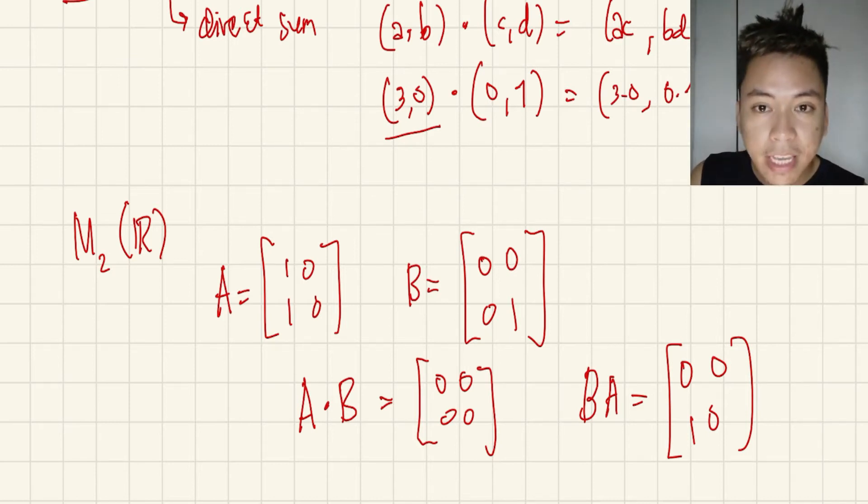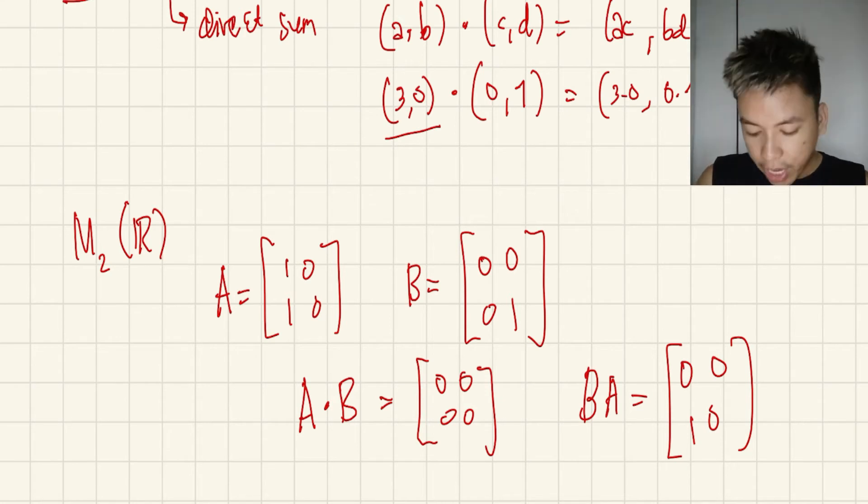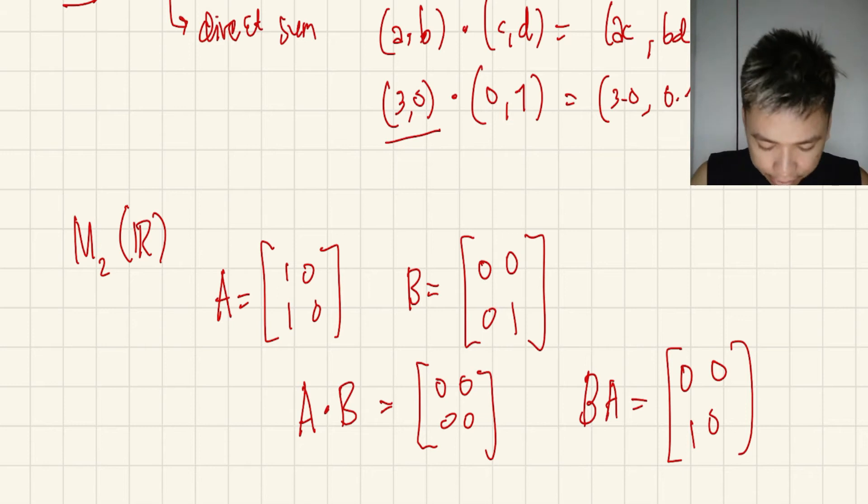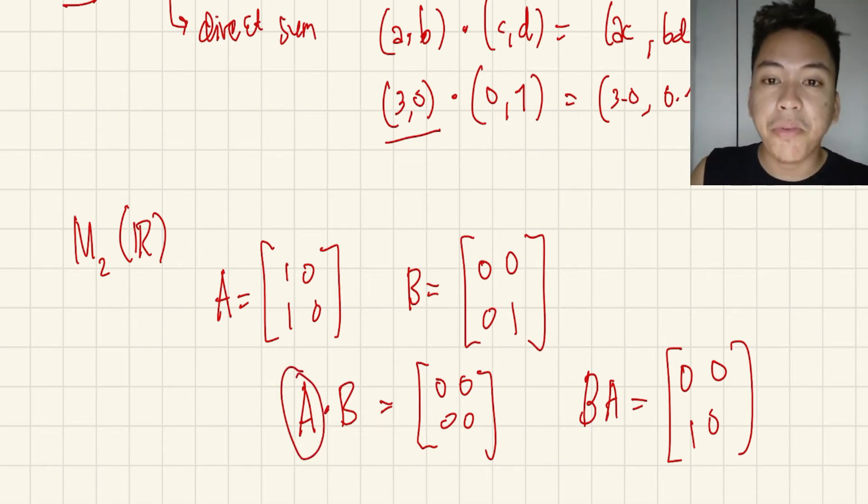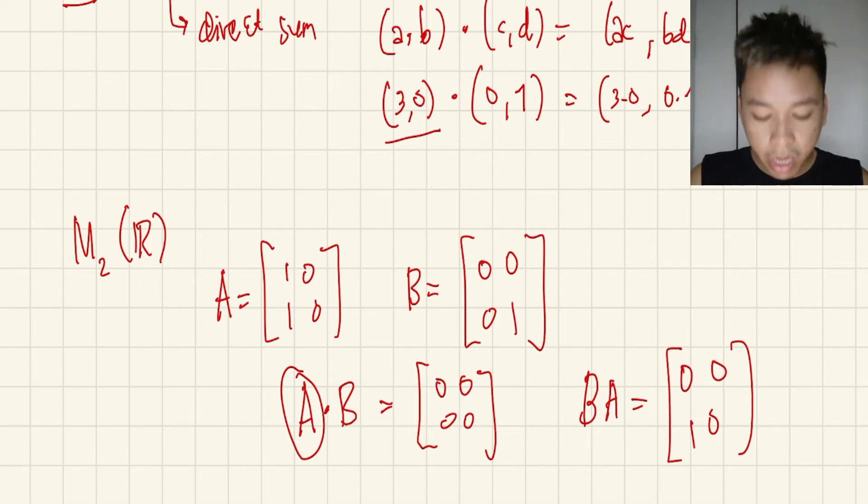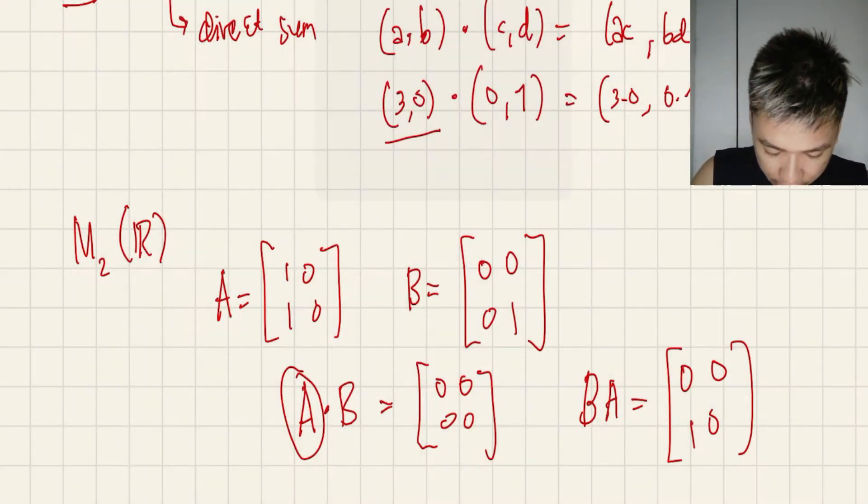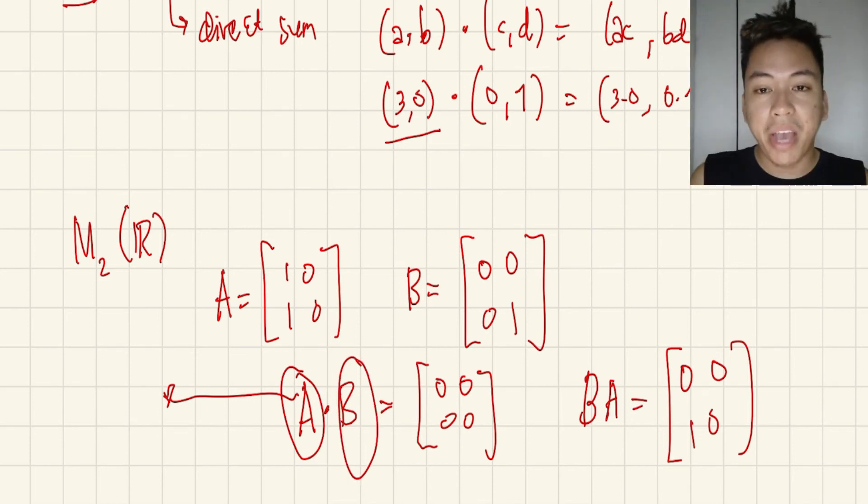So in this case, when you multiply A and B, you get [0,0; 0,0]. And if you multiply B and A, you get [0,0; 1,0]. So meaning in this case, our A is a left zero divisor, but A is not a right zero divisor. A is only a left zero divisor. B, on the other hand, is a right zero divisor. That's it.